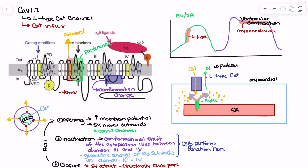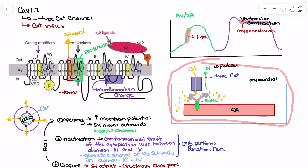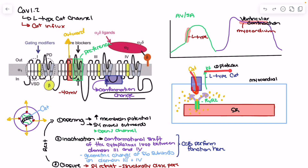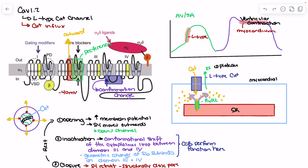Hopefully this provides perspective on the CAV 1.2 channel or L-type calcium channel. We've broken down what the subunits look like, their function in opening, inactivation, and closure, their role in both nodal tissue and myocardial tissue, and what this looks like from an electrochemical perspective: calcium influx, the plateau phase, and how this interacts with the RYR2 complex in the sarcoplasmic reticulum to trigger intense myocardial contraction. It's all about calcium influx into the cell, building concentration around the T-tubules and sarcoplasmic reticulum, activating the RYR2 complex, leading to intracellular calcium dumping, activation of troponin C, and cross-bridge formation.